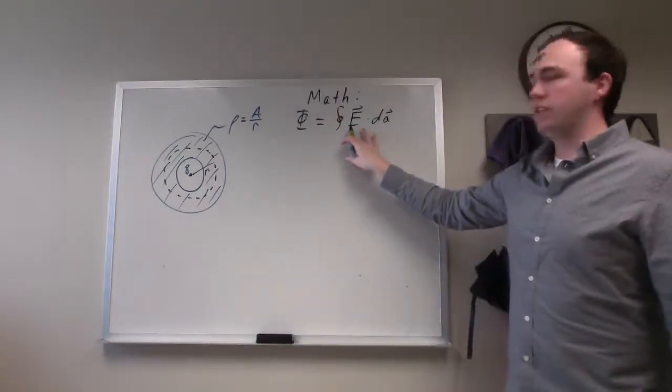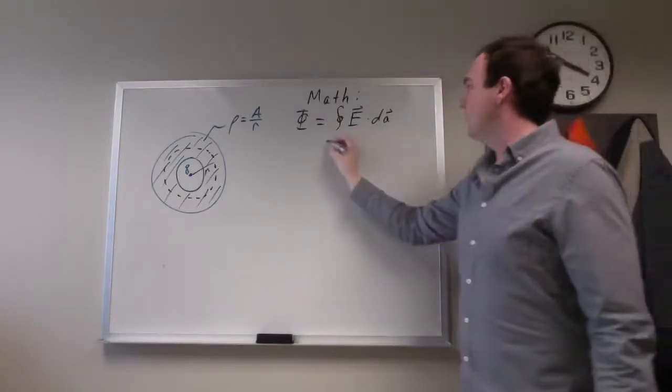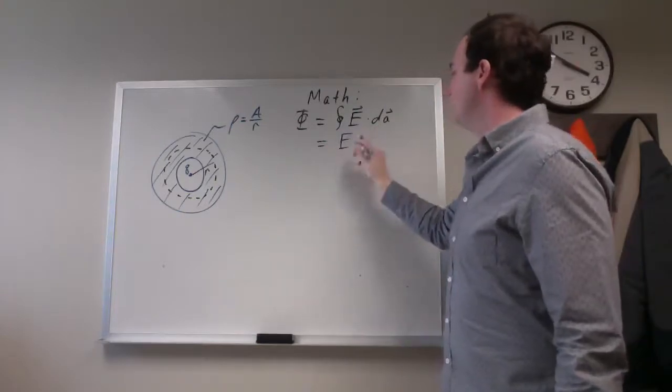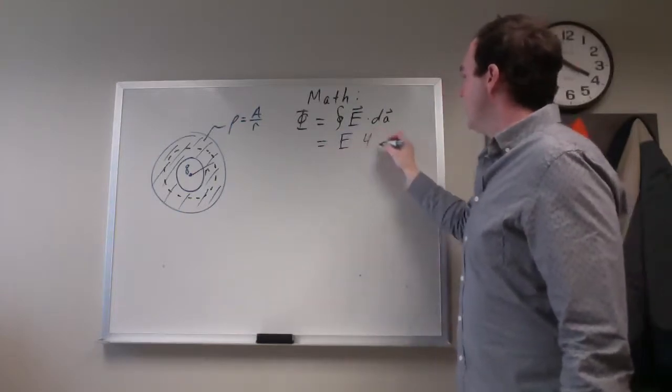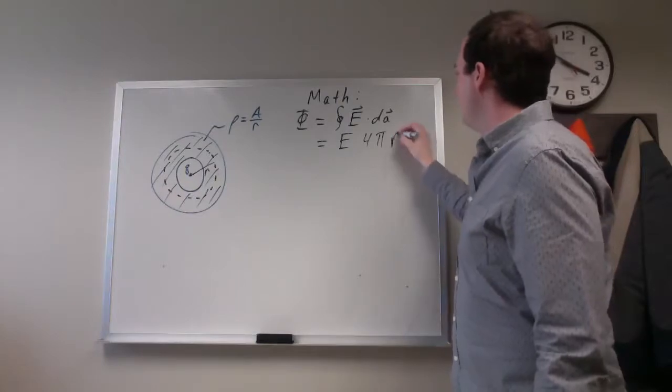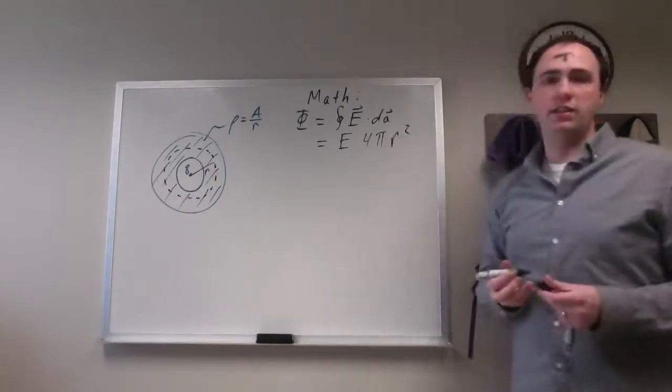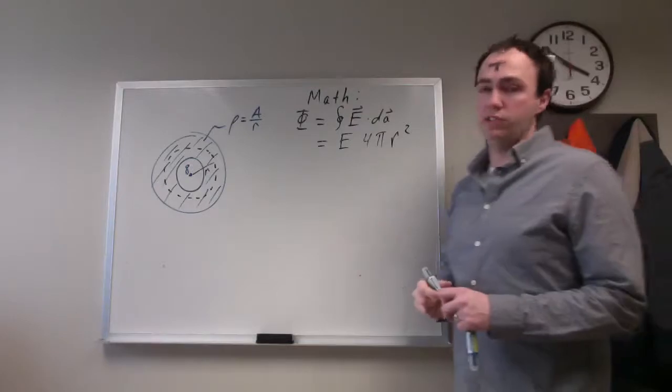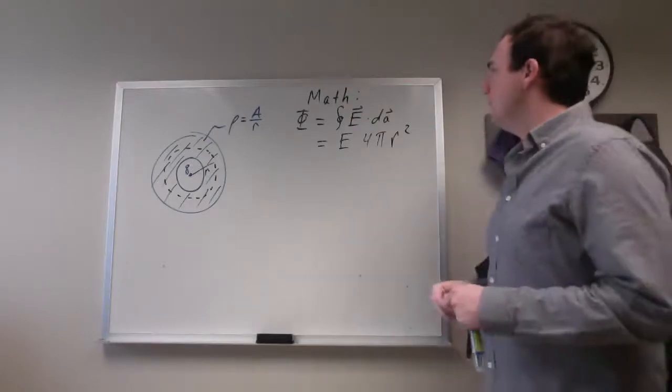You pick that so that you can say that the flux is going to be equal to the electric field times the surface area of that Gaussian surface, that sphere.